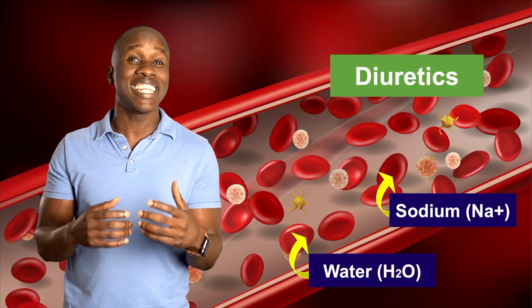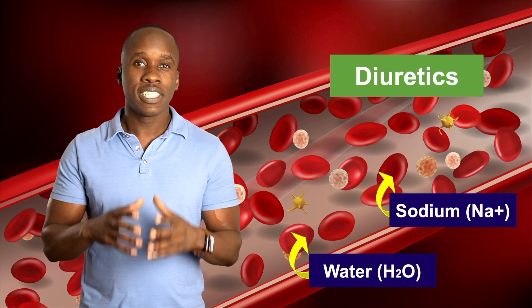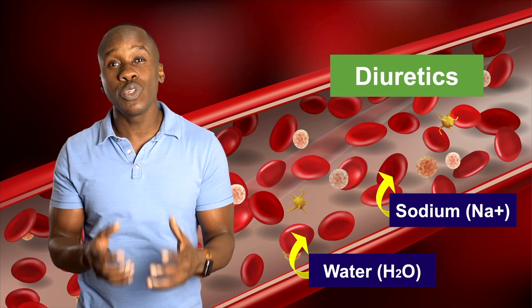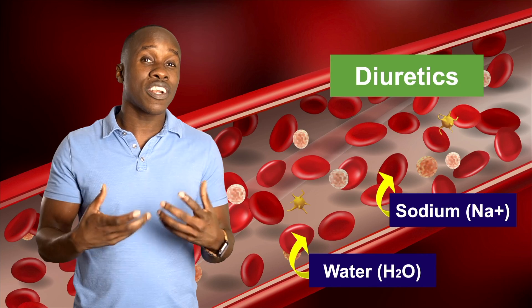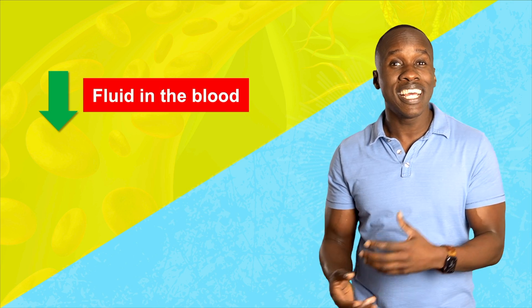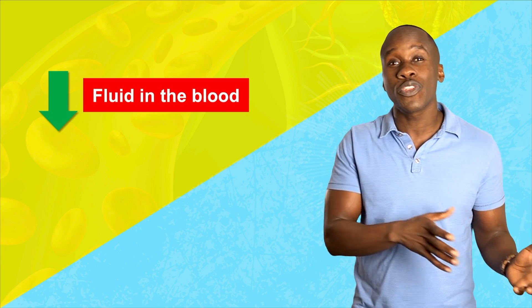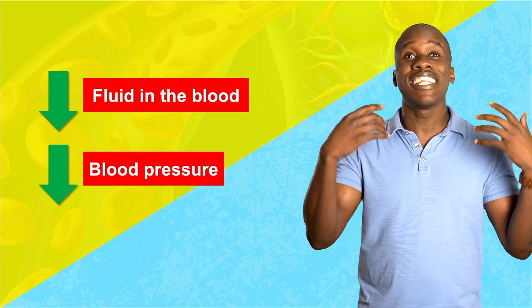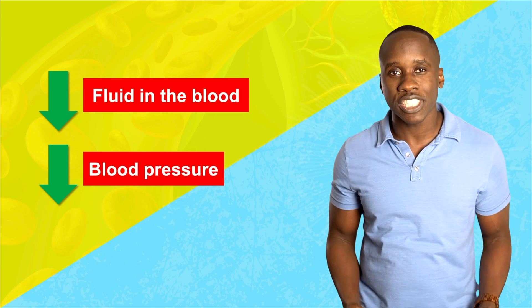Diuretics work by causing less sodium reabsorption — they're basically causing the kidney to get rid of more sodium. By doing that, there'll be less water reabsorption, and the body gets rid of more water, so you pee a lot more — that's why it's called a diuretic. By getting rid of more fluid, you're decreasing the amount of fluid in the blood, and if you have less fluid going through the blood vessels, you have less pressure in those vessels, which is what we want in cases of high blood pressure.